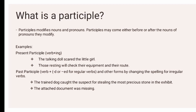Next, past participle — verb plus -d or -ed for regular verbs, and other forms by changing the spelling for irregular verbs. For example: 'The trained dog caught the suspect for stealing the most precious stone in the exhibit.' The past participle here is trained — main verb train plus -ed becomes trained — modifying dog. Another example: 'The attached document was missing.' Attached is the past participle modifying the noun document.